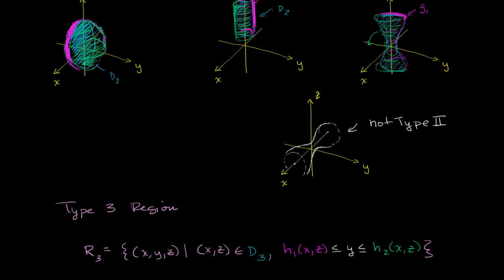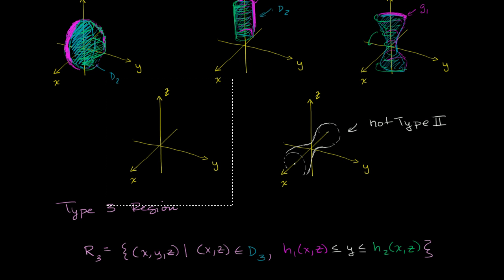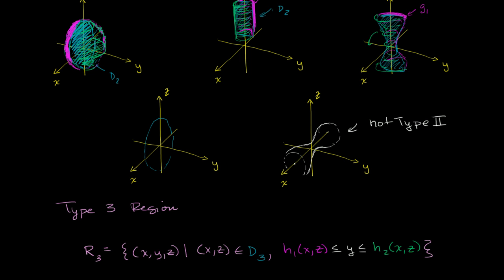This might be a little hard to visualize, so let me redraw the sphere with new coordinate axes to make it clear. The front side of the sphere in the y direction — y's upper bound — that would be h2, which is all of this side facing forward. And then h1 is the lower bound on y, so it's going to be that back side right over there. Then y can vary between those two surfaces and essentially fill up the entire region.